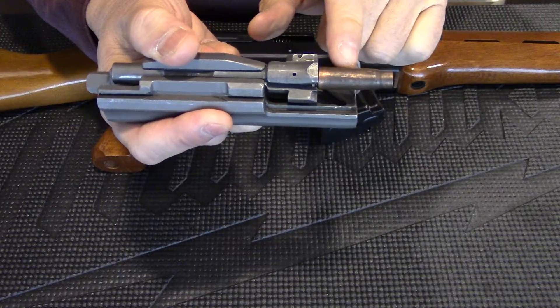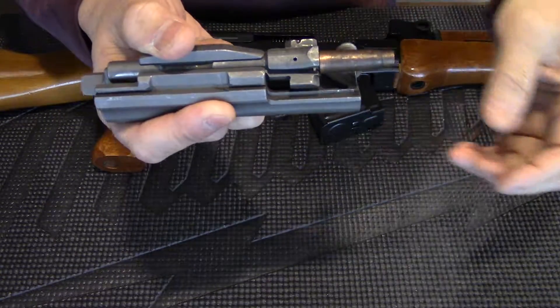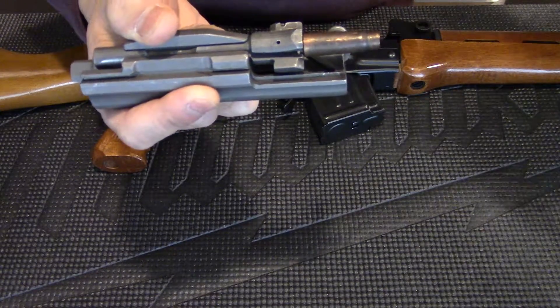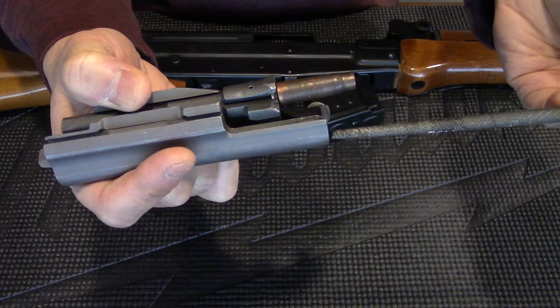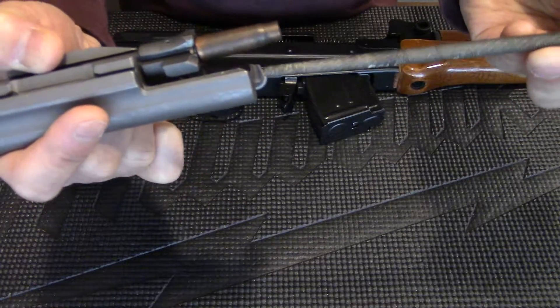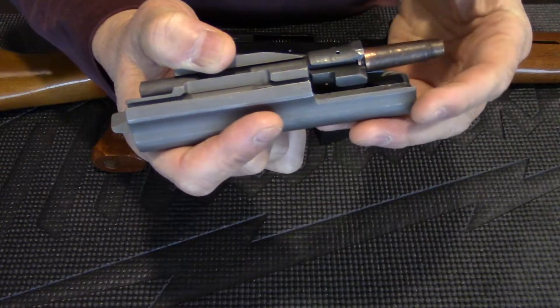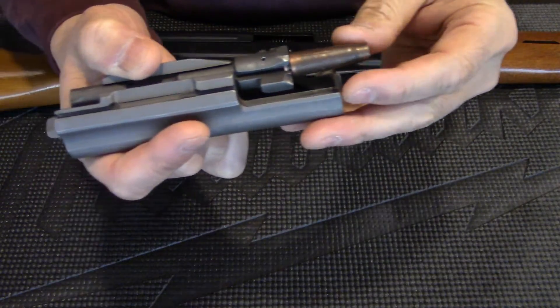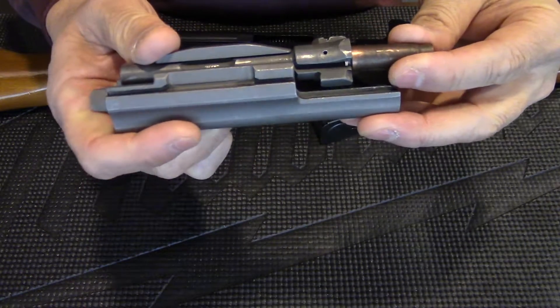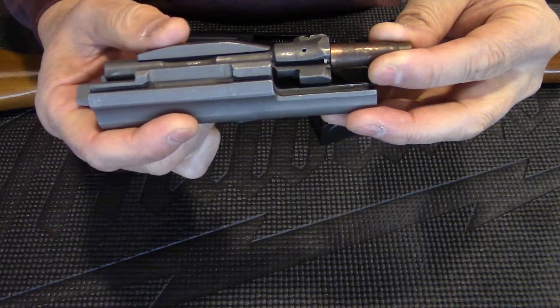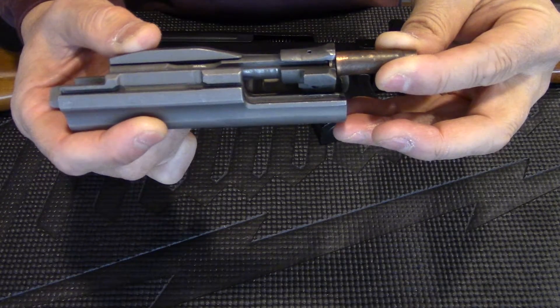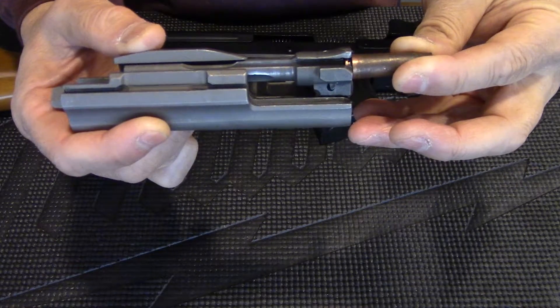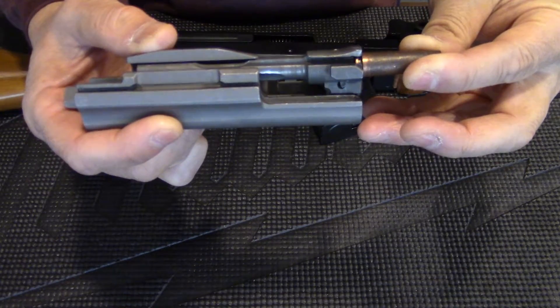The cartridge explodes and the piston comes back and hits the carrier at this point, driving the carrier back. As the carrier moves back, it forces the bolt head to turn counterclockwise about 45 degrees.